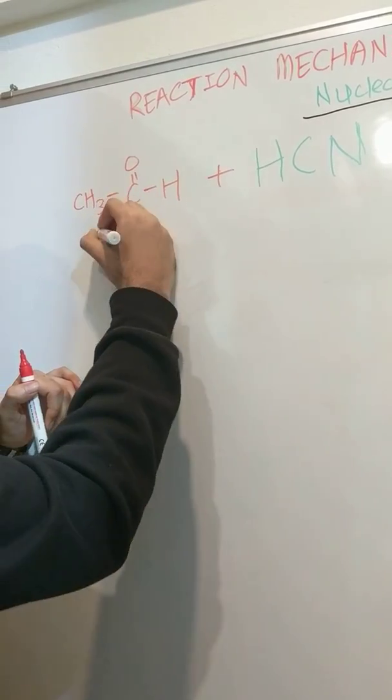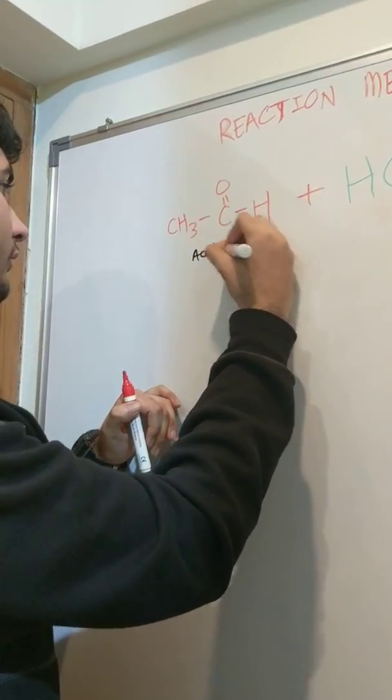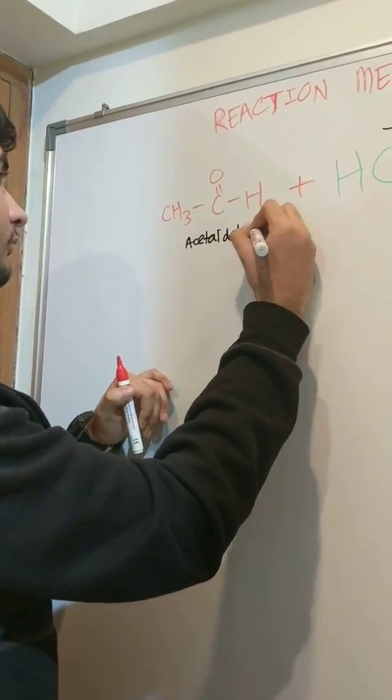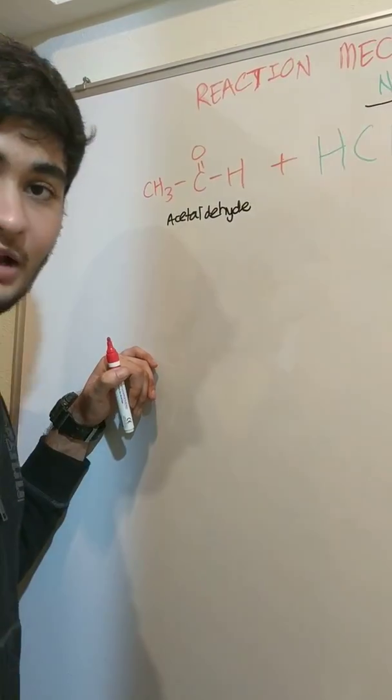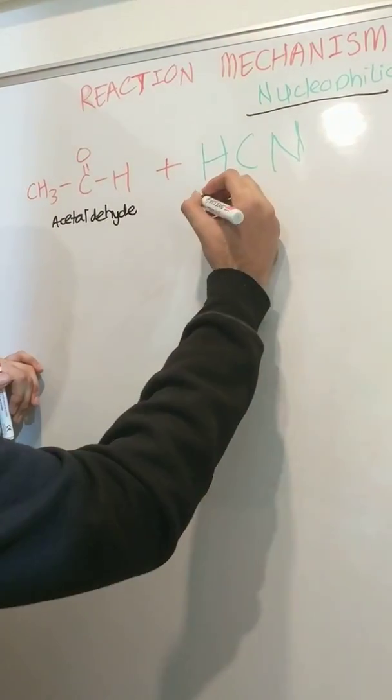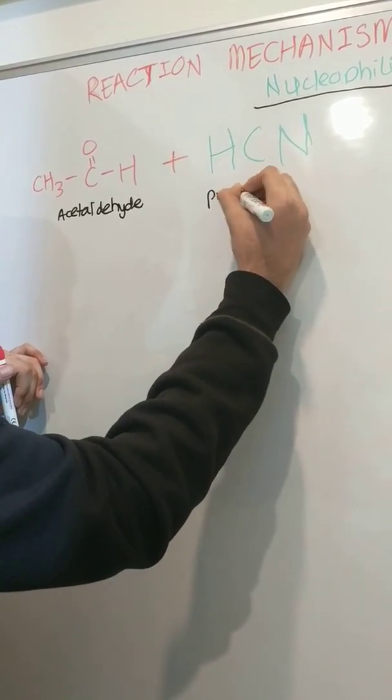Acetaldehyde and Hydrogen Cyanide, popularly known as Prussic Acid.